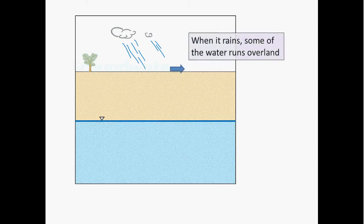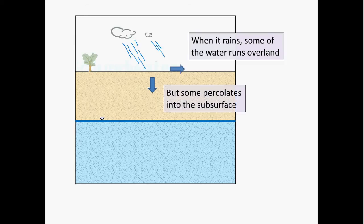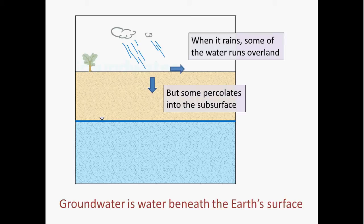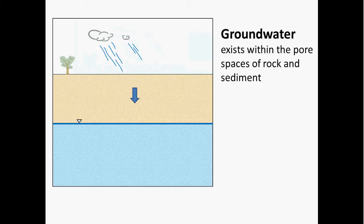So what the heck is groundwater anyway? Well, when it rains some of the water runs overland. It could end up in lakes and streams, potentially make its way to the ocean. But that's not where all of the water goes. Some of it percolates into the subsurface. And groundwater is basically just water that exists beneath the earth's surface. It exists within the pores, the pore spaces in rocks and sediment.